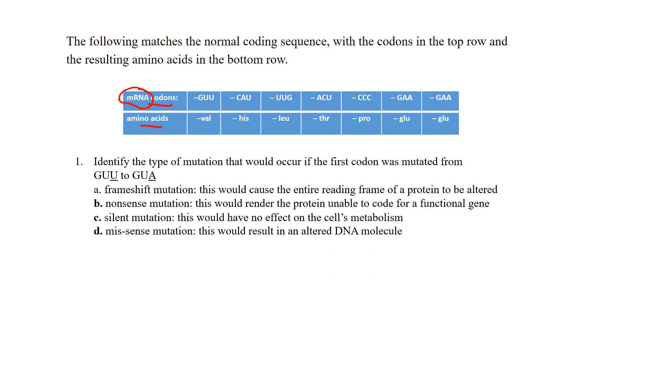Let's do the first question here. It says identify the type of mutation that would occur if the first codon was mutated from GUU to GUA. So they're saying that instead of a U it got mismatched to an A. That's the point mutation and a point mutation is just one nucleotide that is mismatched.